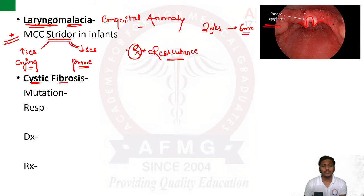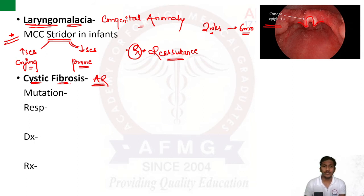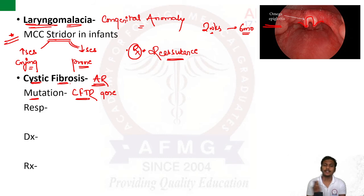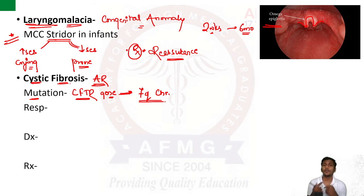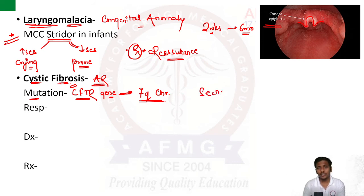Cystic fibrosis is a genetic condition more common in western countries with an autosomal recessive pattern of inheritance. The mutation is in the CFTR gene — cystic fibrosis transmembrane conductance regulator gene — located on chromosome 7q. CFTR normally keeps secretions like mucus thin; if CFTR is non-functional, secretions become thick and viscid.